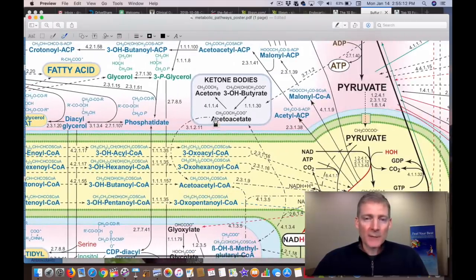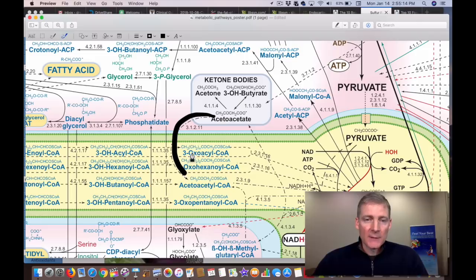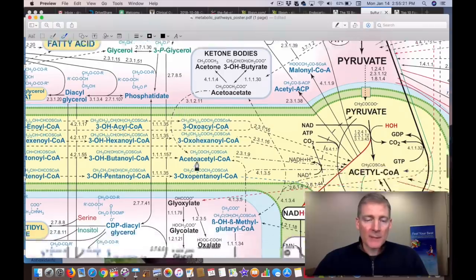Here's another way to get into the mitochondria. That's ketone bodies. You can see that curvy arrow right there. There's the three ketones, and that's another way to get into the mitochondria.